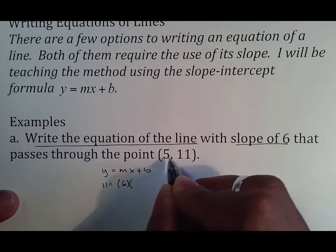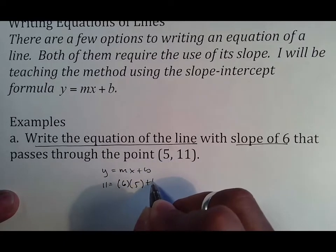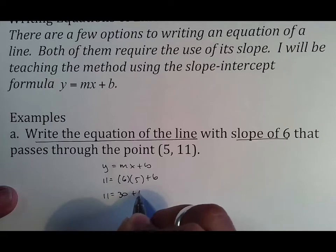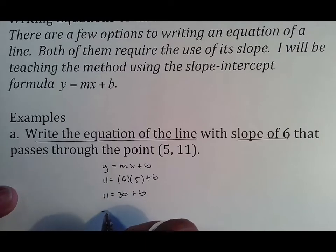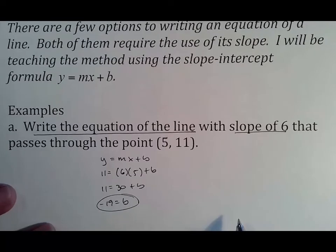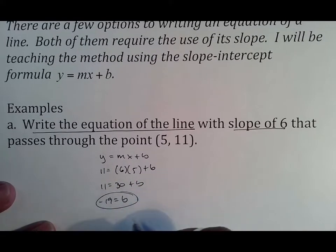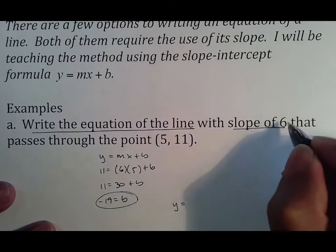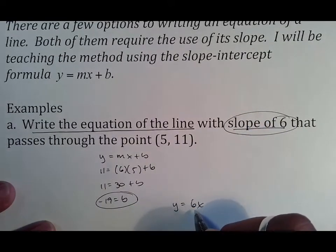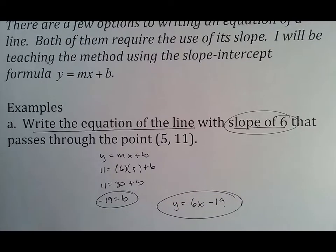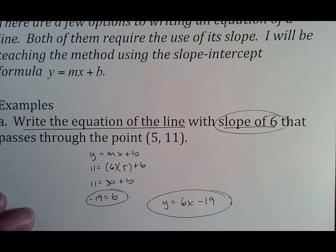With y = mx + b, plug in: y is 11, m is 6, x is 5, plus b. Using algebra: 11 = 30 + b, subtract 30, you get negative 19 = b. You now have the value of b. So the equation of the line is y = 6x − 19.